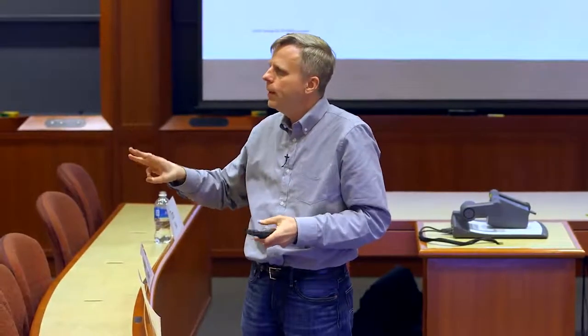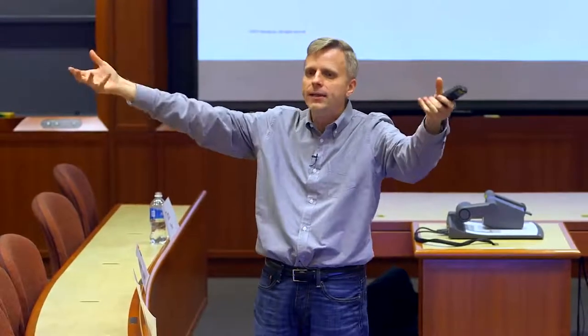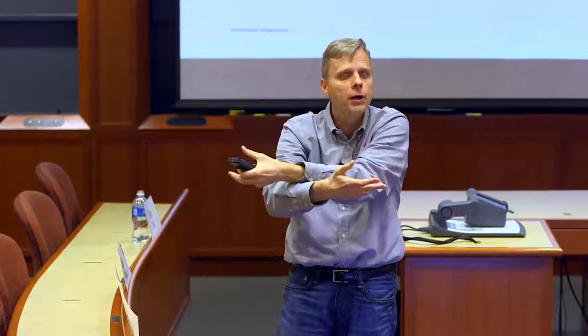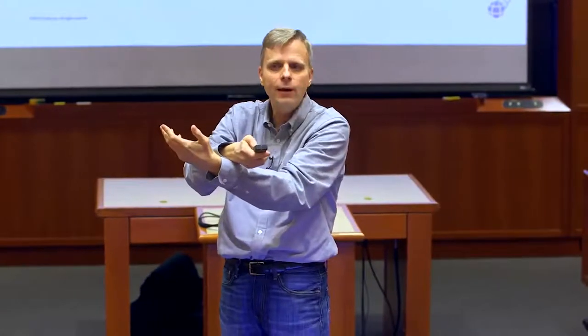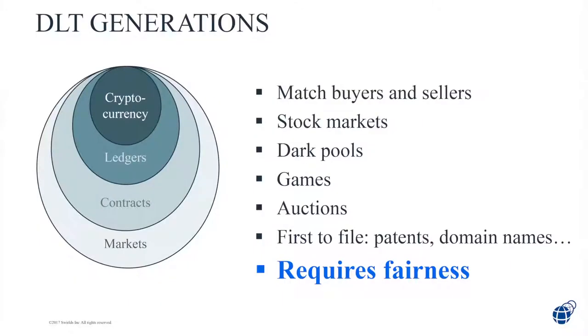Those are the three generations: first, put money in our ledgers; second, put other information like assets in our ledgers; third, let us trade money and assets with smart contracts. But if we can do that, it raises the question: should we do a fourth generation? If we have money and assets and the ability to do sales, then how do we get matched up? We need markets — some way that sellers and buyers get matched up. But you have to have fairness to have markets.